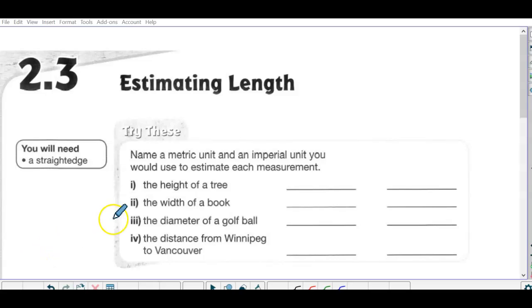So basically what makes sense in terms of unit of measure. So height of a tree, for example, saying kilometers too big, saying centimeters too small. So a height of a tree most likely would be meters. And in terms of imperial, we'll do metric in the first column, imperial in the second, might be feet most likely. Could be yards. So feet or yards.